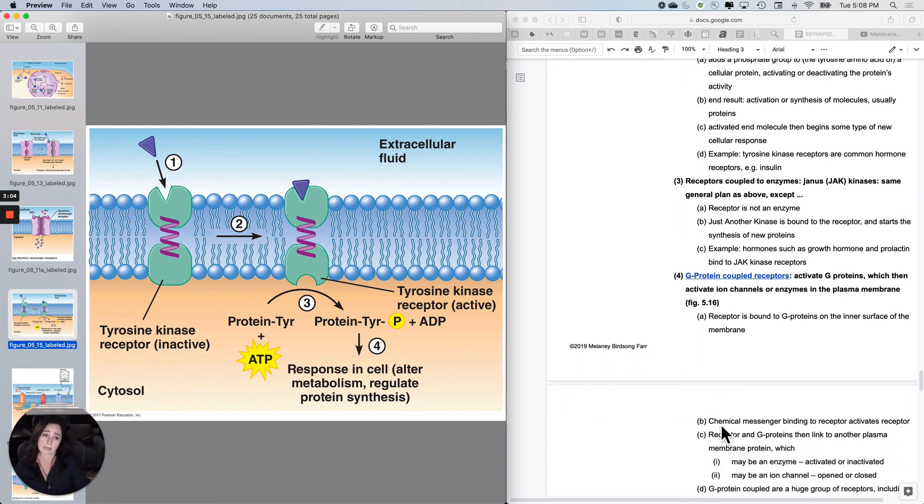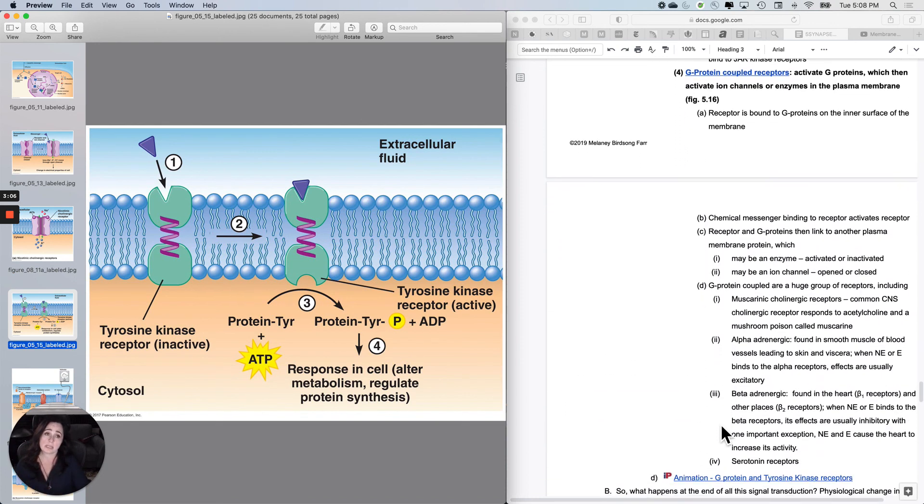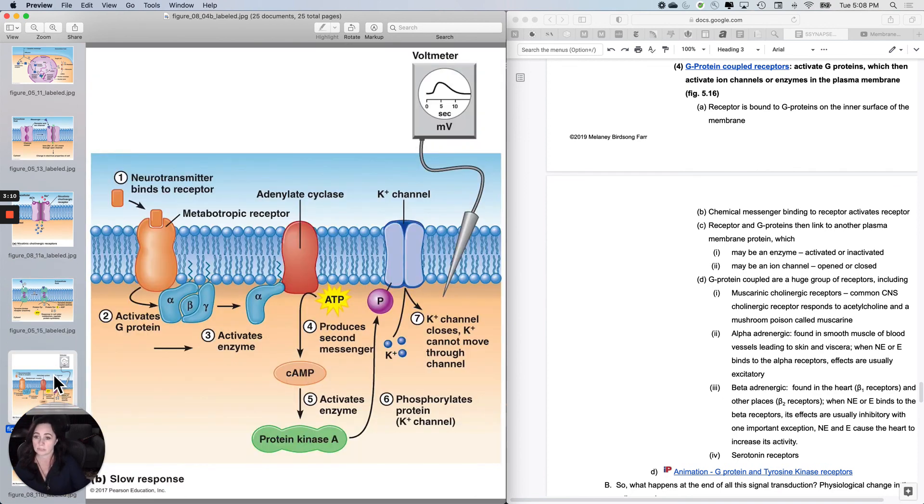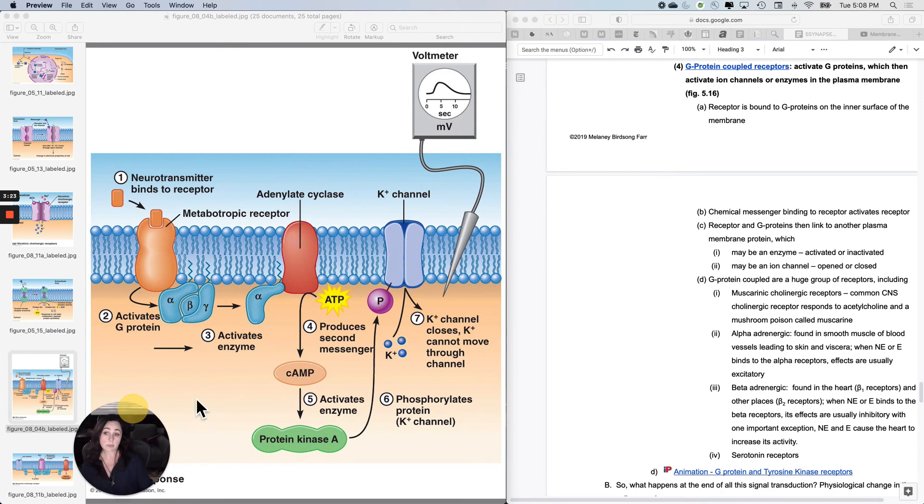And then the really complicated one are called the G protein coupled receptors. And these are just like, so hard to imagine how they evolved because here's the receptor. Here's the thing that you want to cause a different activity on, and then here's three other proteins that are involved in the process somehow. In Texas, we would call that going around your ass to get to your elbow.